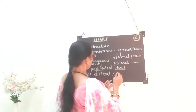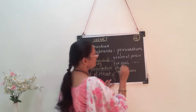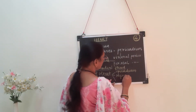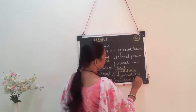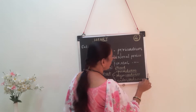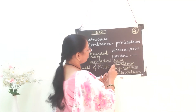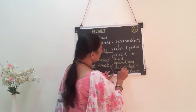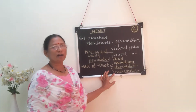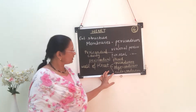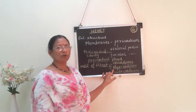The three layers of the heart are: first, the epicardium, which is the outermost layer; second, the myocardium, the middle layer; and third, the endocardium, the innermost layer. All these words end with 'cardium,' meaning heart. 'Myo' means muscles, so myocardium is the middle layer made up of cardiac muscles that bring about the pumping action. Epicardium and endocardium are made up of squamous epithelial cells.